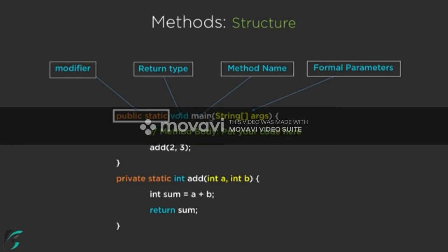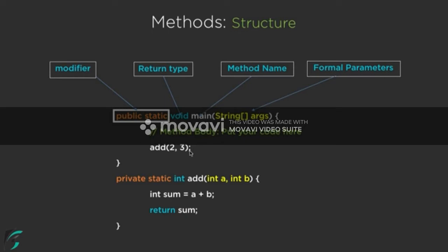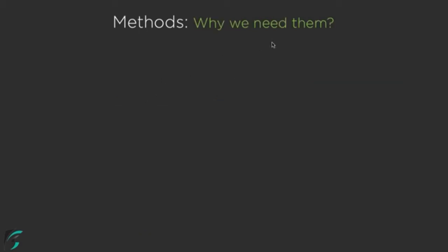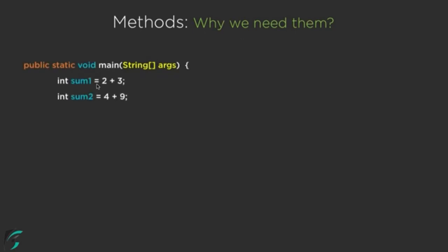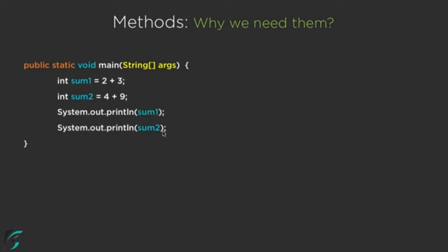This statement returns the sum of 2 and 3, and inside the main function we can utilize the sum and print it. Now you must be thinking — why do we need this method? Why not just add a and b inside main directly? Let us look at a slide comparing both approaches. On the left: sum1 = 2 + 3, sum2 = 4 + 9, then print sum1 and sum2.